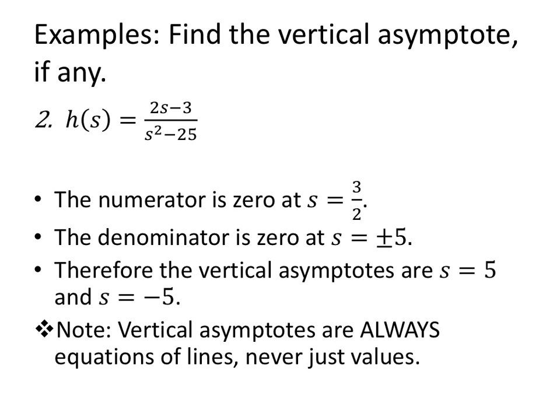h(s) = (2s - 3)/(s² - 25). I know my numerator is zero at three halves. My denominator is zero at both positive and negative 5. Therefore, the vertical asymptotes are s = 5 and s = -5. Very important here. Vertical asymptotes are always equations of lines. s = 5, s = -5. Never just values s = ±5. This is a value. This is where the denominator is zero. Asymptotes are equations of lines. So you have to have your variable, an equal sign, and something on the right.